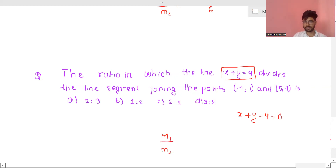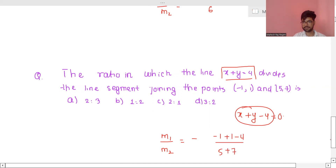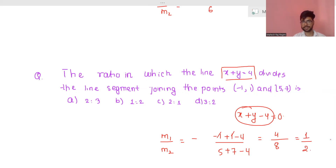m1 to m2 is plus 2 minus something. Point (x1, y1) is (-1, +1, -4). Point (x2, y2) is (5, +7, -4). Minus minus plus 4 and minus 4 — minus 1 by 2 divided to 1 by 2.